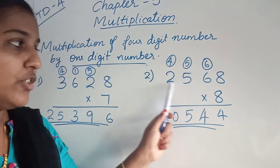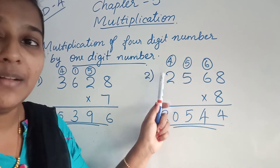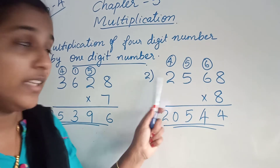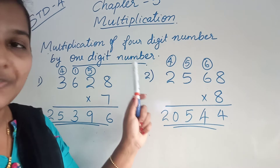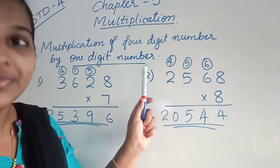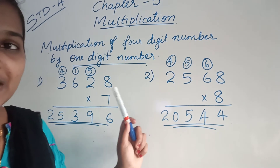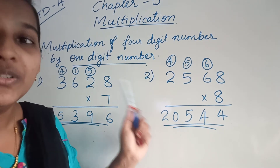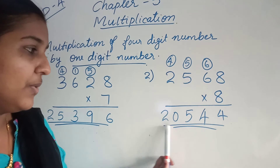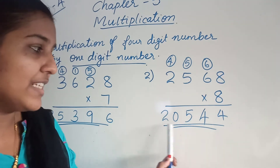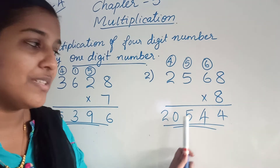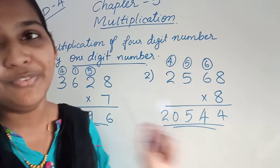Now, 8 into 2. 8 twos are 16. 16 plus 4 is 20. So you will get the answer 20,544.